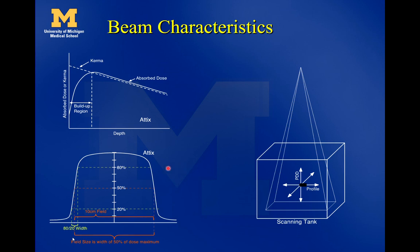We normalize these profiles to 100% at some preferred depth — maybe Dmax or 10 cm deep. We tell the software that the central axis value should be 100%, and it rescales the graph accordingly.